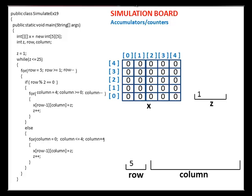Another looping statement is met under else statement. Assign 0 to variable column. Proceed to the looping condition. Is column less than or equal to 4? Yes. Assign the value of z to x row minus 1 column. Row minus 1 is 5 less 1, which is 4. Column is 0. Z is 1. Therefore, assign value 1 to x row 4 column 0 array allocation. Increment z, making it 2.